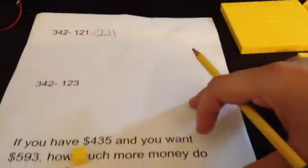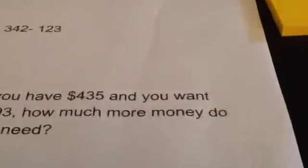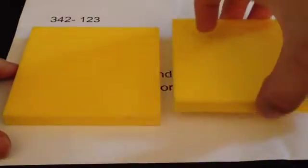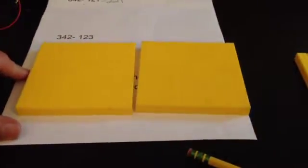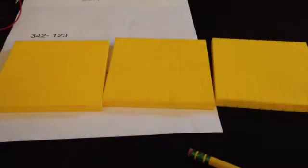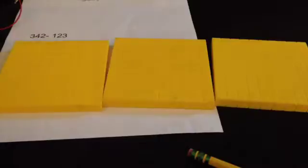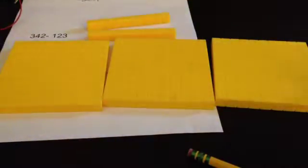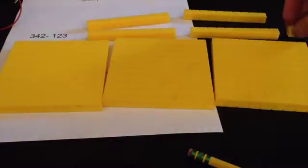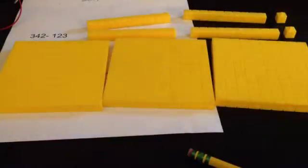Let's try another one. This time we're going to have to do some regrouping. This bottom problem is for later. Don't worry about that. 342. 100, 200, 300. Now I need 4 tens. 1, 2, 3, 4. And 2 ones. 1, 2. Now I have 342.